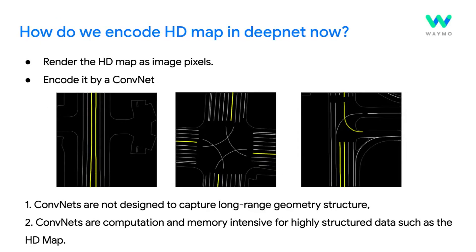In autonomous driving, we use machine learning models to understand the HD maps and the surrounding objects for behavior prediction. The classical method to leverage the HD map in deep learning is to rasterize the HD map features onto a 2D top-down grid, and then run a CNN on it. However, such methods suffer from many shortcomings.